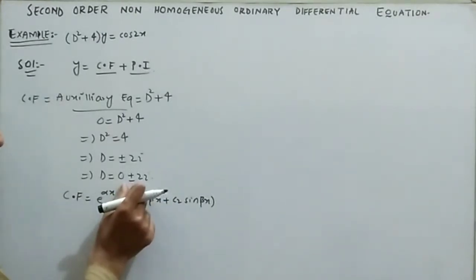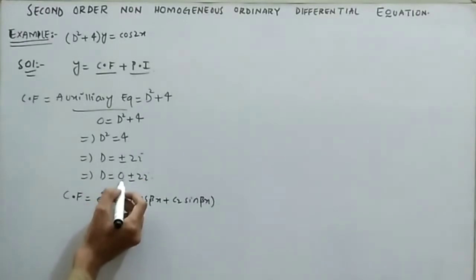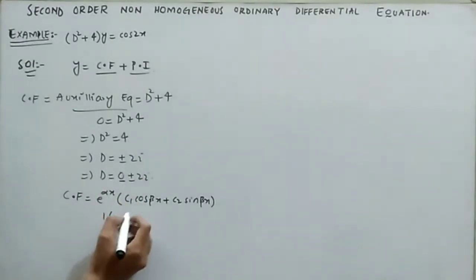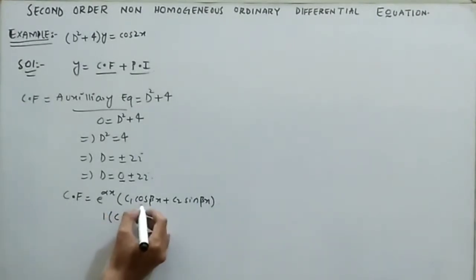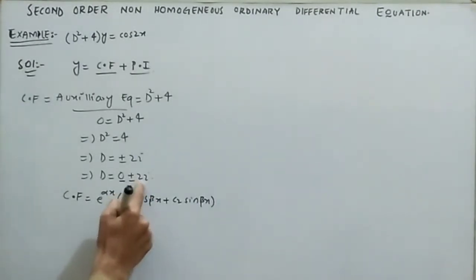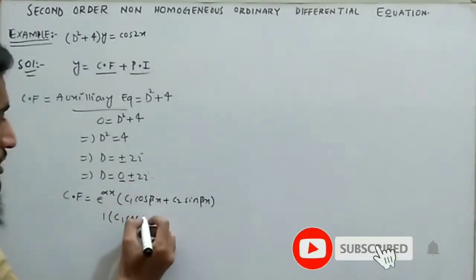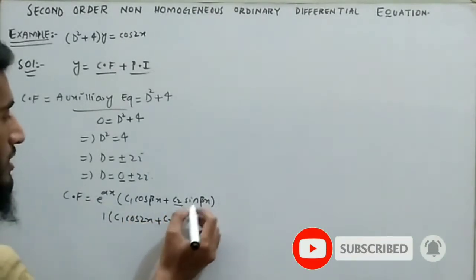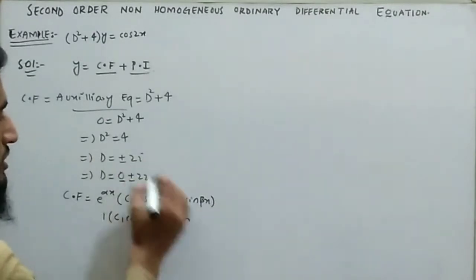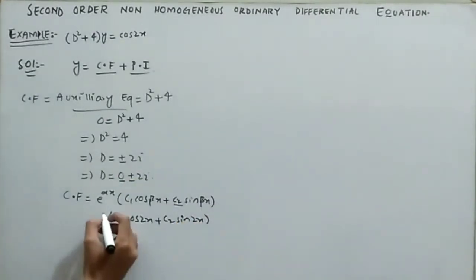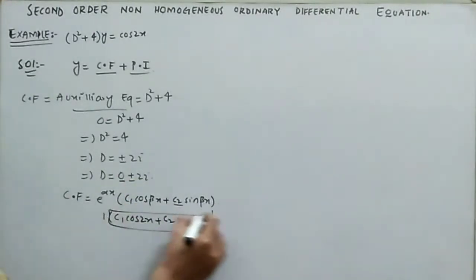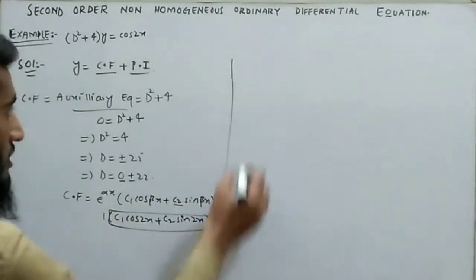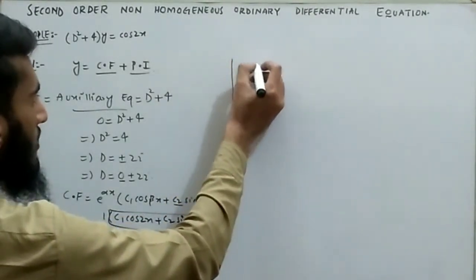Here, α is the real part, which is 0, so e^(0·x) = 1. β is the imaginary part, which is 2. Therefore, the complementary function is: c₁ cos(2x) + c₂ sin(2x). This is the required complementary function.